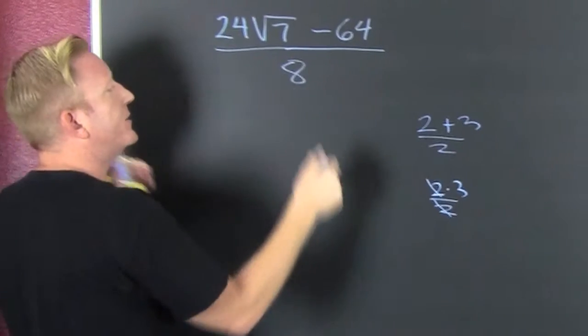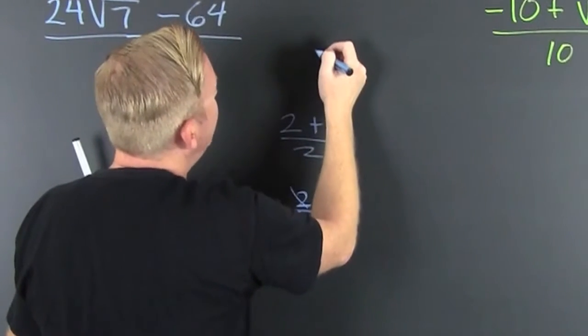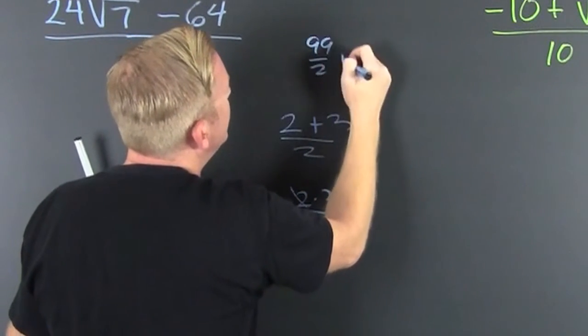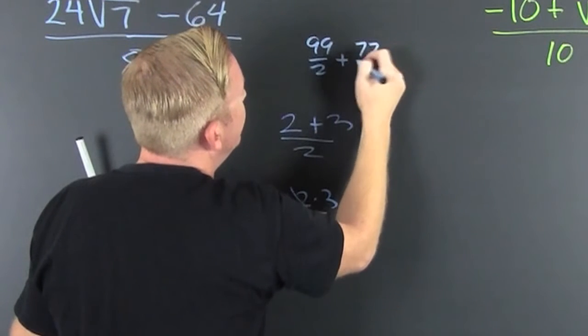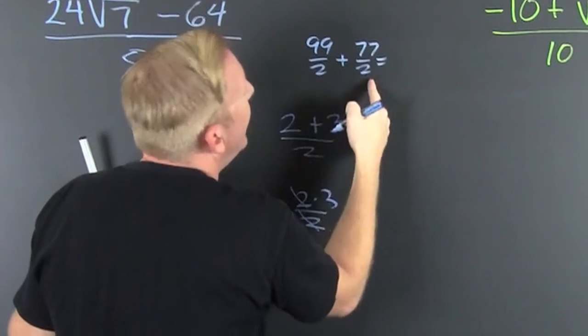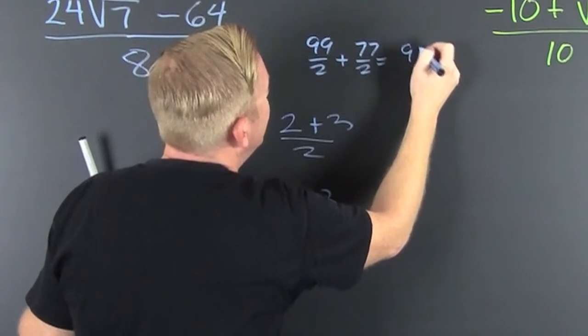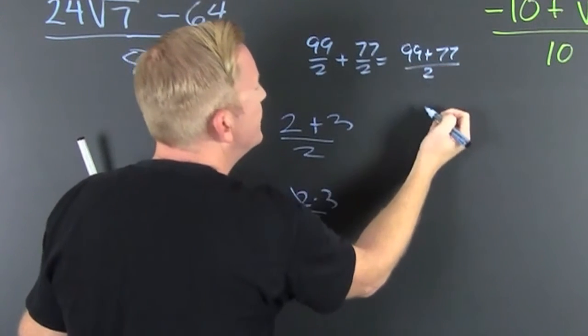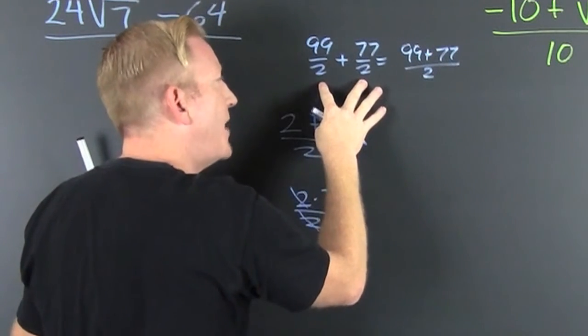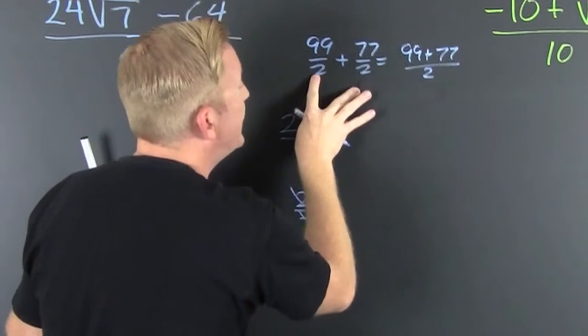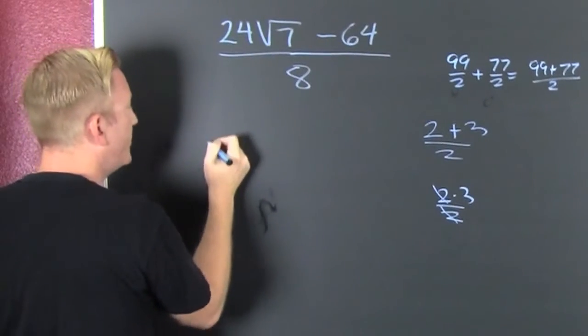So what do I do? I can split those guys. If I had 99 over 2 plus 77 over 2, could I? I could. I could write that 99 plus 77 all over 2 because they got a common denominator. What's my point? You can split that fraction up into 2. Sure.